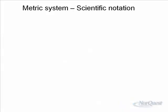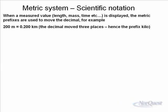So moving on to the next tool that we need and that's scientific notation. When a measured value, whatever that you're measuring as we discussed on the previous slide, length, mass, time, etc. is displayed, the metric prefixes are used to move the decimal. So 200 meters, we're not using scientific notation there, that's called standard notation.